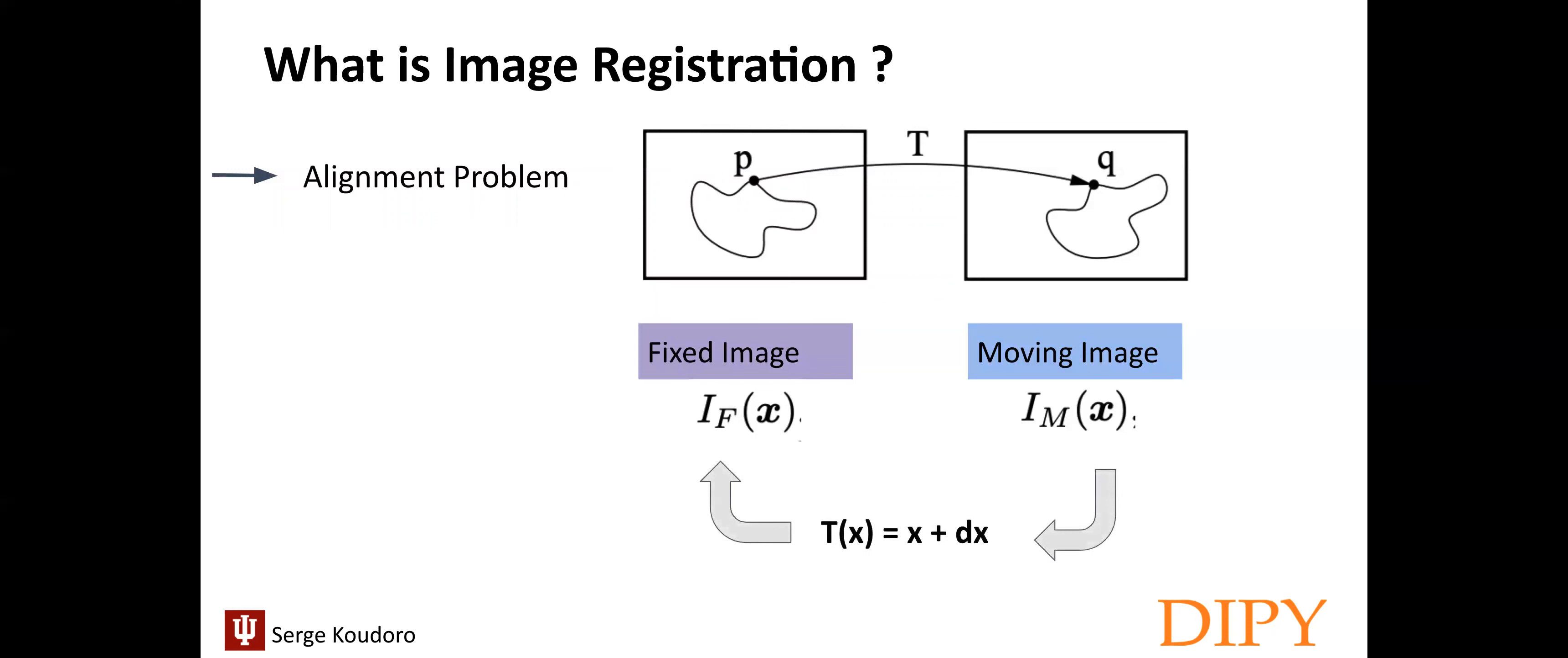In other words, an equivalent formulation is to say that the registration is the problem of finding a transformation T(x), where you see the equation on this slide, that makes I_M, our moving image, spatially aligned to our fixed image. The transformation is defined as the mapping from the fixed image to the moving image. So our goal is to find the best T(x). Usually, the fixed and moving images have a specific dimension D and each of the images have their own spatial domain. But before we go deeper into that, let's see why do we need this alignment.